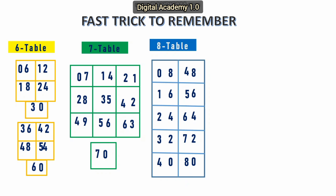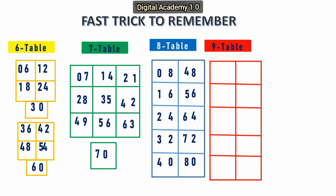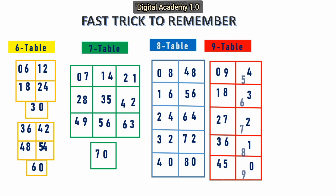Next, table of 9. This is very easy to understand. In the first step, you need to enter consecutive numbers from bottom 0 to 9. In the second step, simply enter the consecutive numbers inversely from top 0 to 9. Hence it becomes the table of 9.